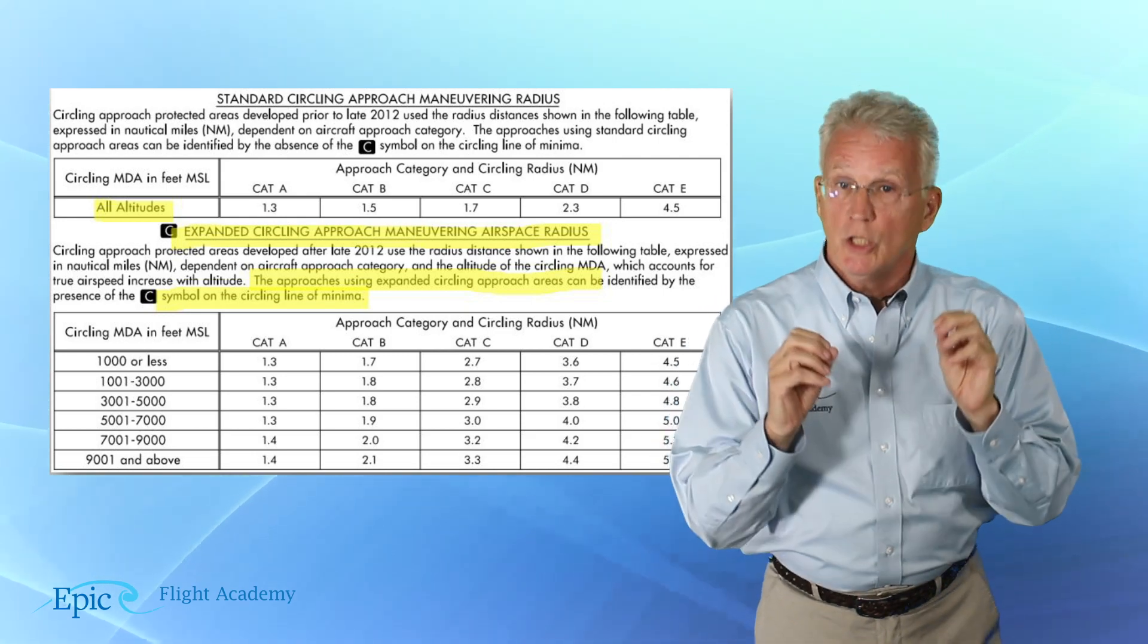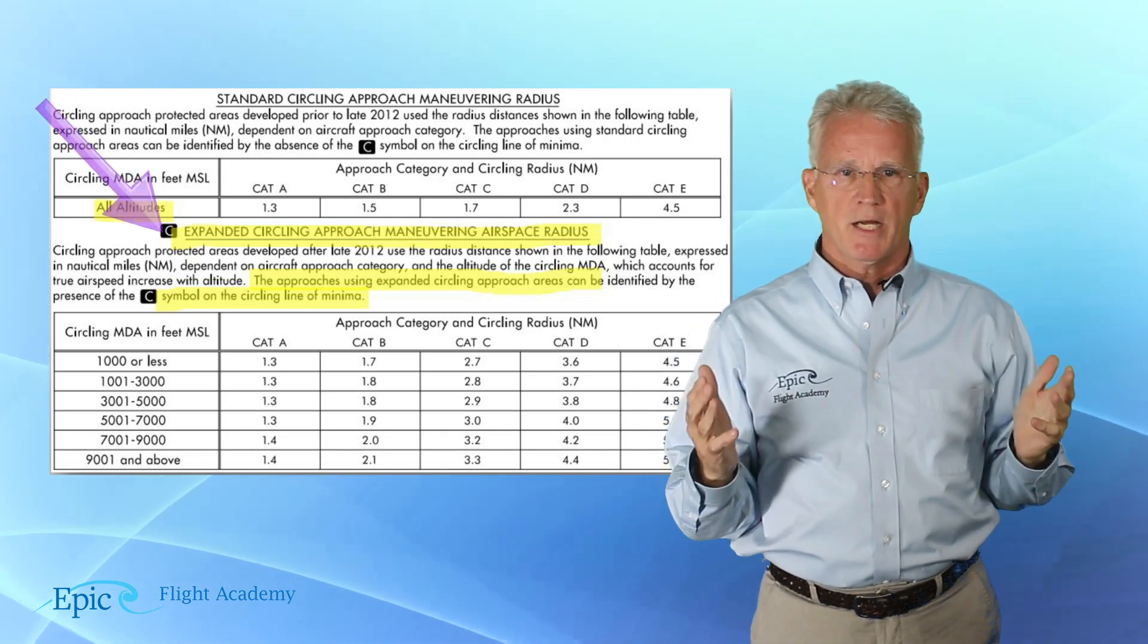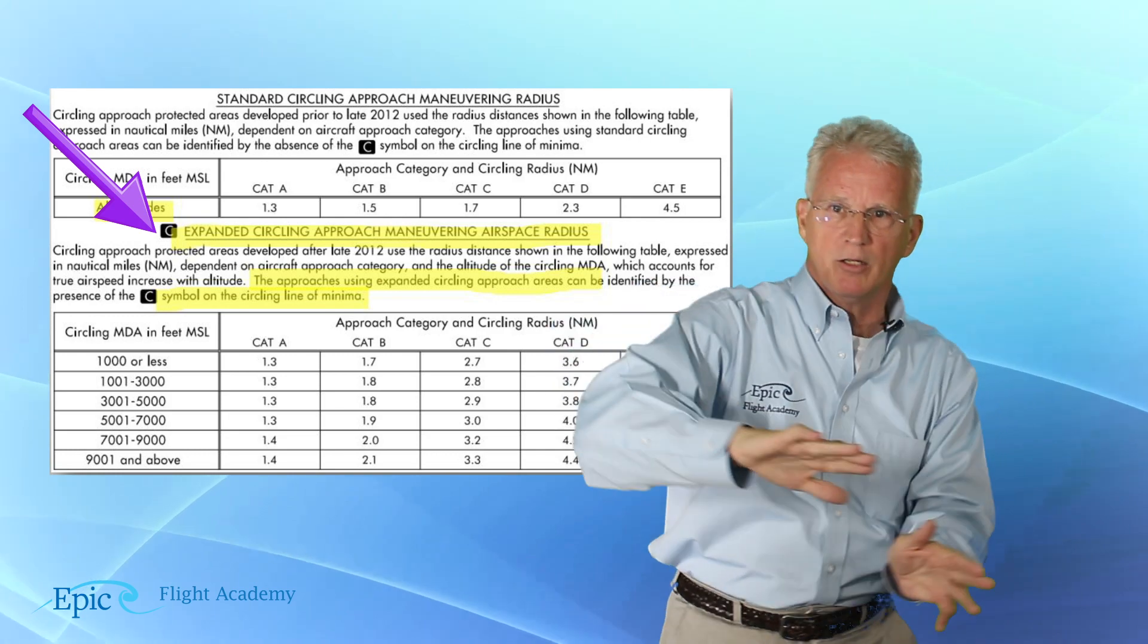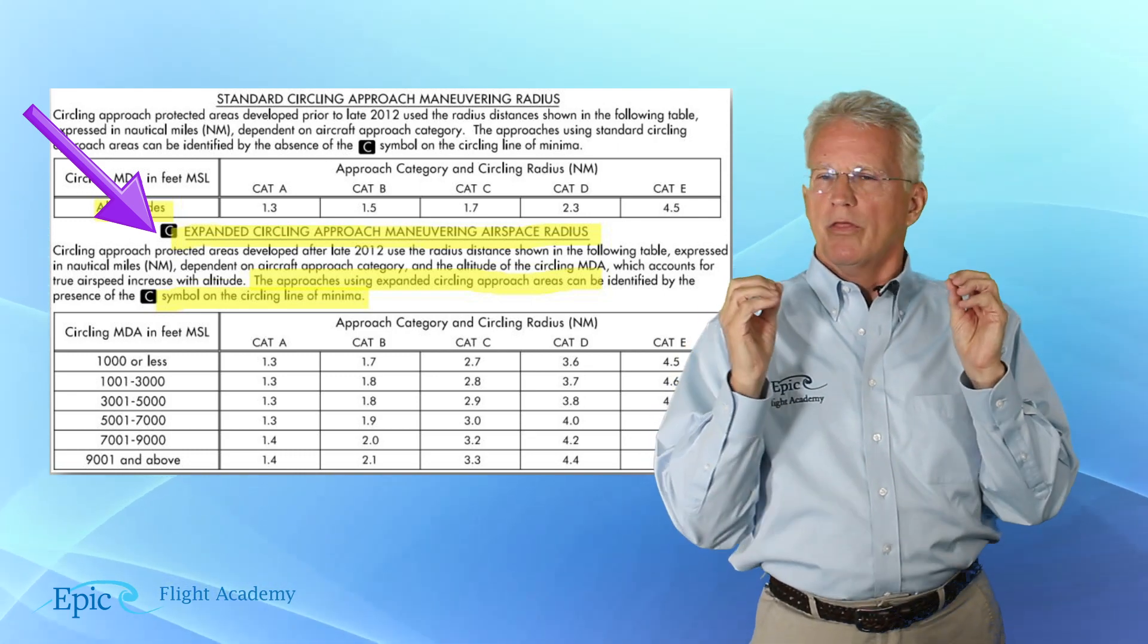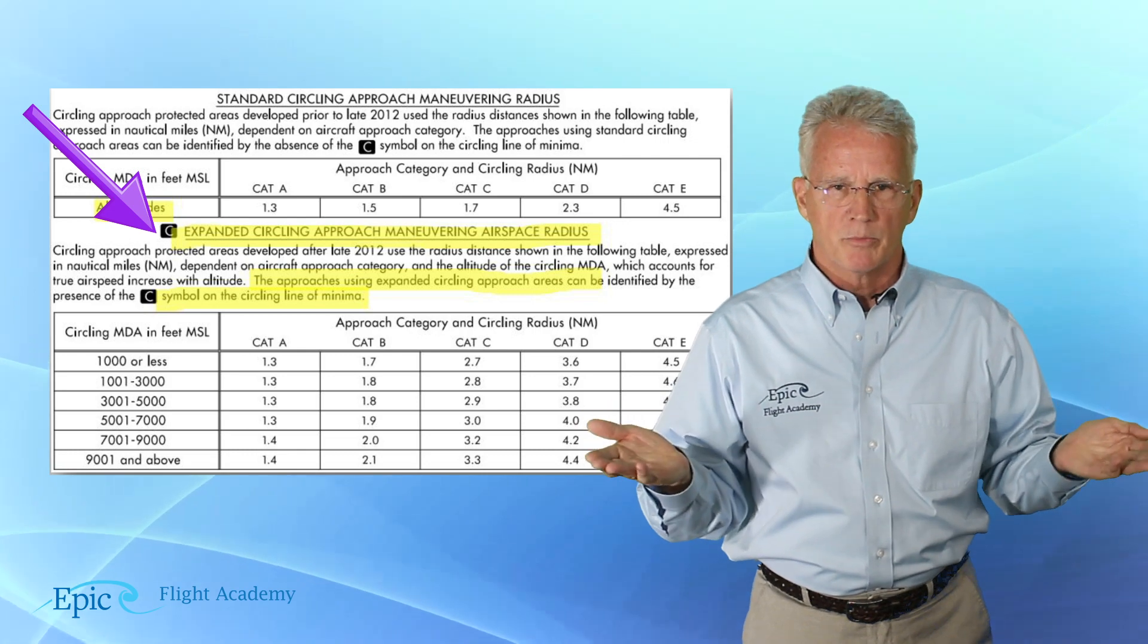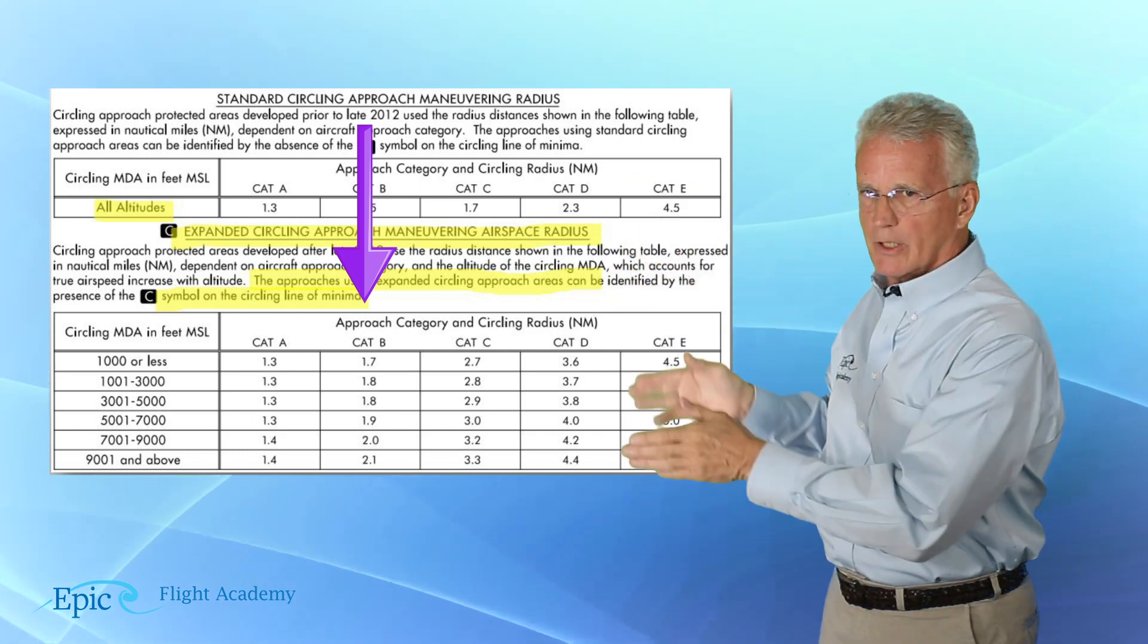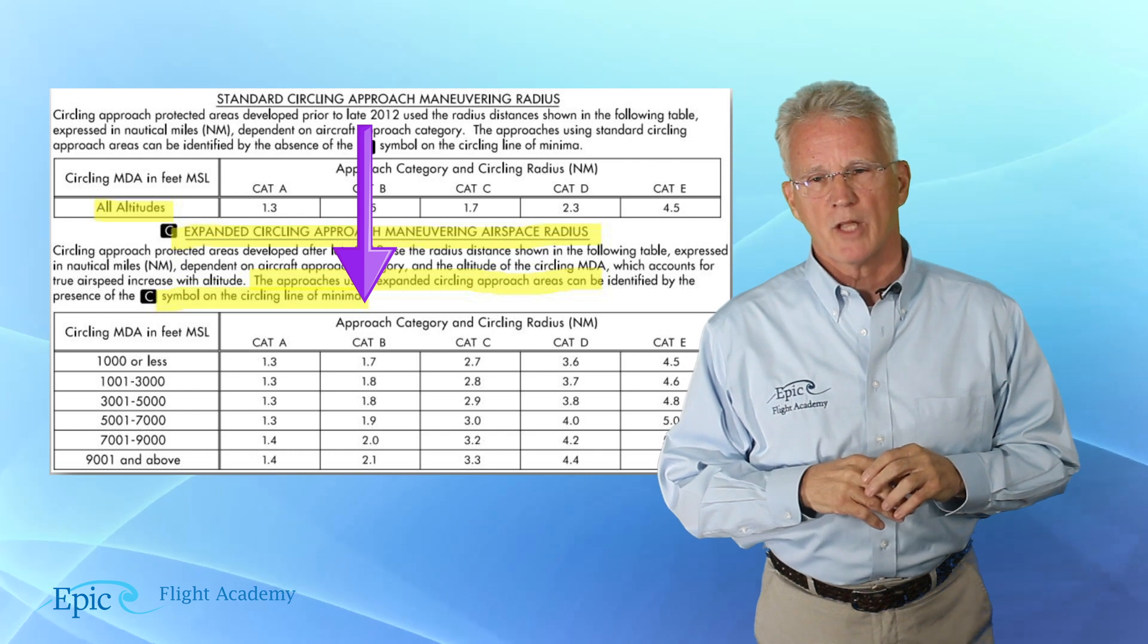However, due to concerns with increase in true airspeed at higher altitudes, the FAA has published expanded circling minimums. Now pilots in faster aircraft at higher altitudes were requiring steeper banking maneuvers during the circling procedure. And so this has resulted in these expanded circling approach maneuvering minimums. So at the bottom of this chart, you can see those expanded minimums. So again, let's stay in category B. Now as I come down the column in category B, on the left-hand side, I see circling MDA in feet MSL. And notice, for example, let's say my airport had an elevation of 2,700 feet.